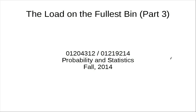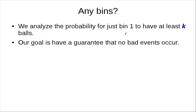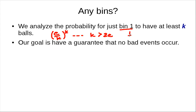Let's finish our discussion on the load on the fullest bin. We previously analyzed the probability that bin 1 has at least k balls — it is at most a certain bound. By a factor of 2, if k is larger than 2e, then this function becomes something like 1 over 2 to the k. This value goes down pretty quickly — exponentially — as k gets large, since k is in the exponent.